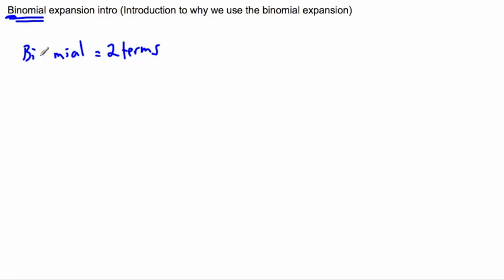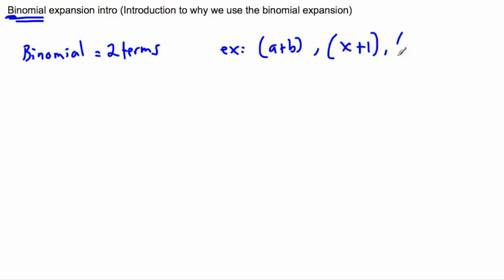Something that's a binomial has two terms. For example, 'a plus b' — that's two terms, that's a binomial. Or 'x plus one' — two terms. Maybe something weird like '1 over x minus 3y' — that still has two terms, a term here and a term here. These are all binomials.